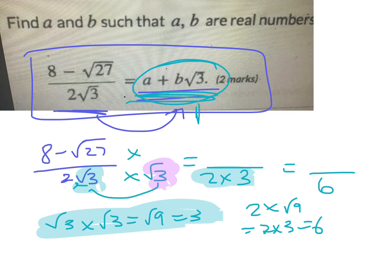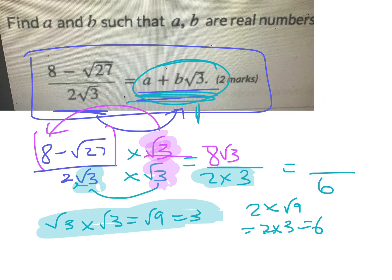I just multiplied the bottom by root three, so I now have to do the same to the top — what you do to the bottom you do to the top. That way you don't actually change the fraction, because you're multiplying by root three over root three, which is just one. So you get root three times eight, which is eight root three, and root three times root 27.